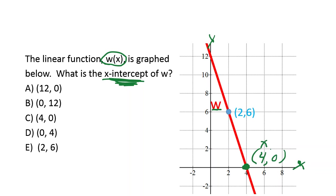As a note, your points are always labeled x, y. Your x-value, then your y-value. So since x was 4 and y is 0, we know our x-intercept is the point 4, 0.